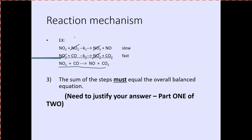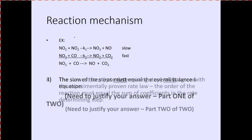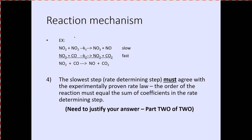There are several things you have to check: one, does the overall reaction give you the overall balanced equation? Two, does the slowest step agree with the experimentally proven rate law? In other words, does the stoichiometry of that elementary slow step give you the experimentally determined rate law?